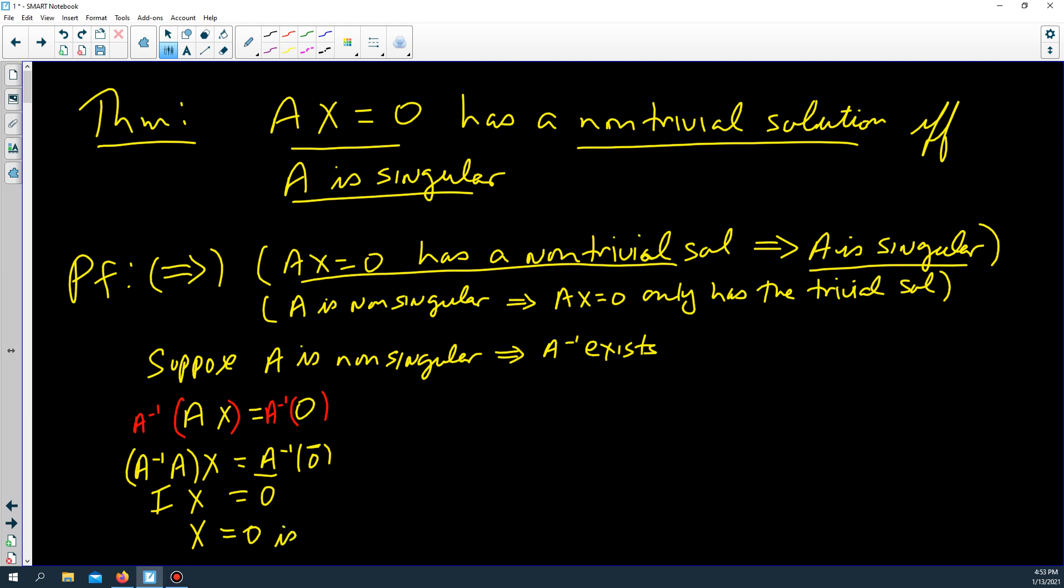And I times X is X. So, X equals 0 is the solution, the only solution. That is, the only solution is X equaling the trivial solution. And that's done.